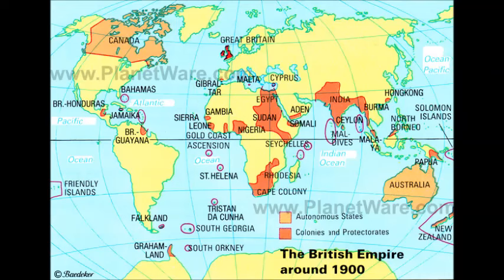Some people joke that the only thing the Commonwealth countries have in common is no wealth. It is true that many of them are third world or developing countries. However, the Commonwealth also includes wealthy nations, like Canada and Australia.